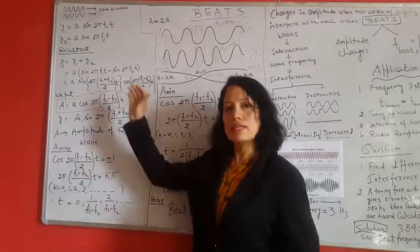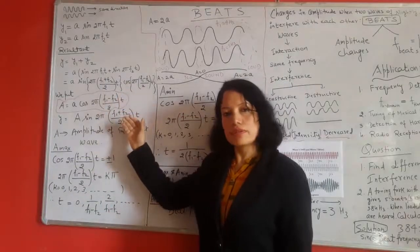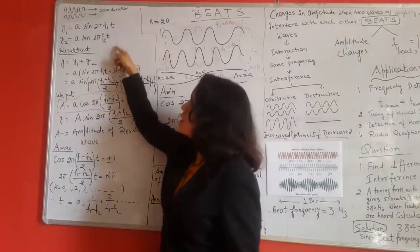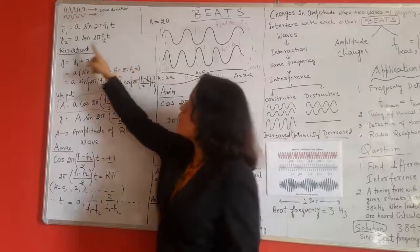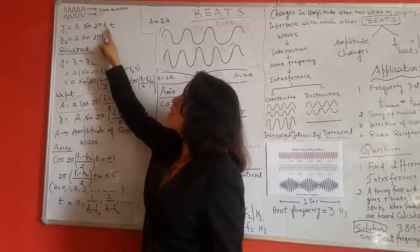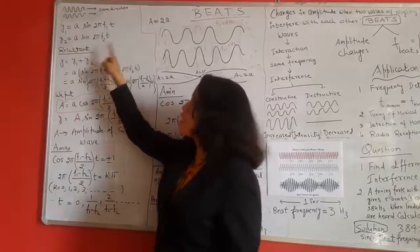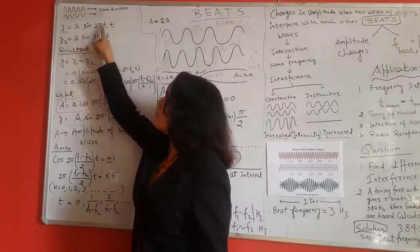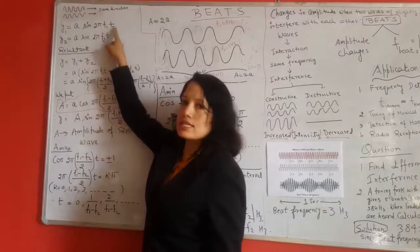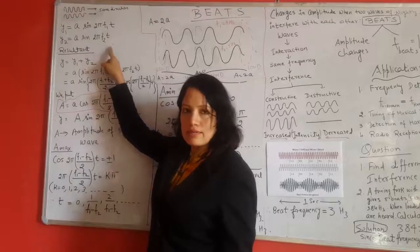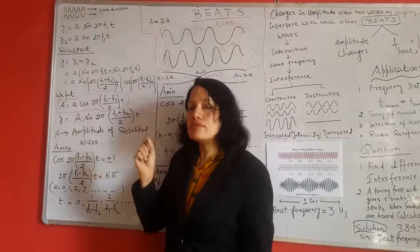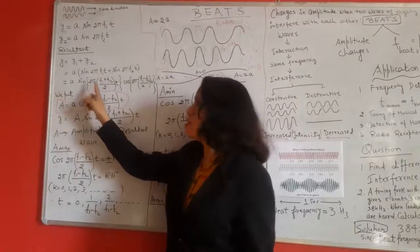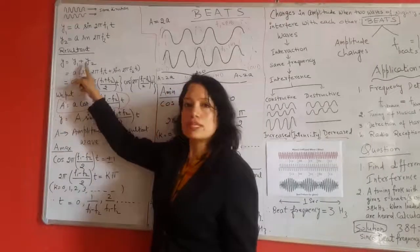Now let us quickly look at the mathematical description of beats. Since there are two waves involved, these two are the equations of two waves. One is y1 = a sin 2π f1 t and y2 = a sin 2π f2 t, where a represents the amplitude which are same for both the waves and f1 and f2 are the frequencies of the two waves respectively which are very slightly different from each other. To get the result we will apply the principle of superposition according to which y = y1 + y2.